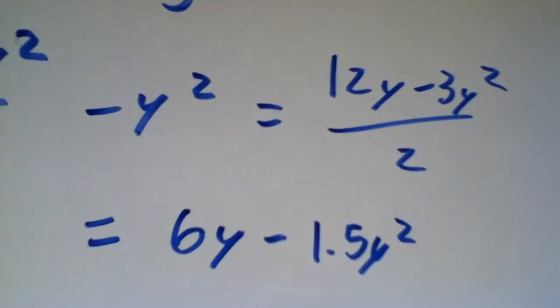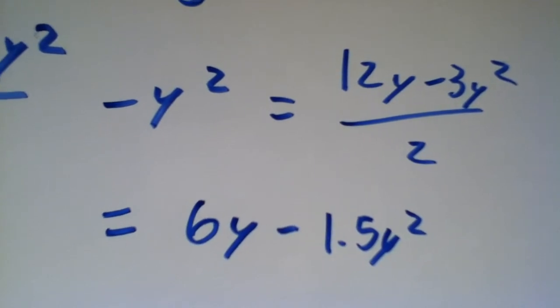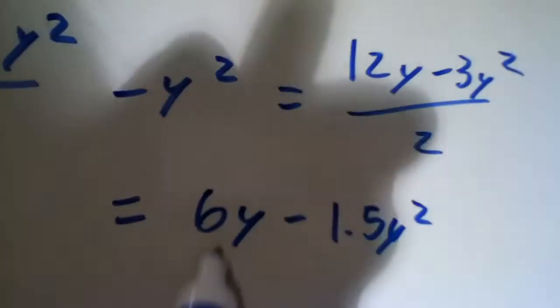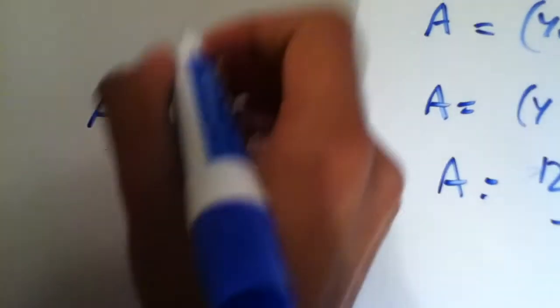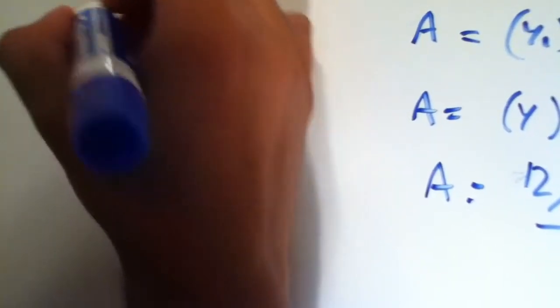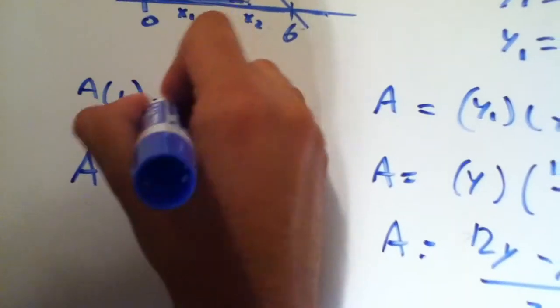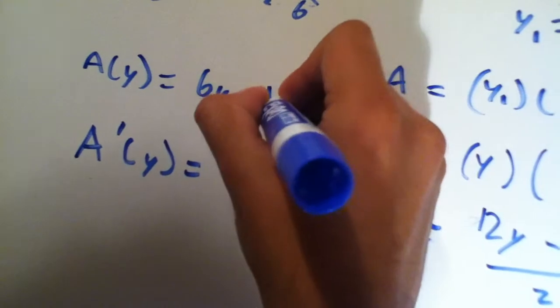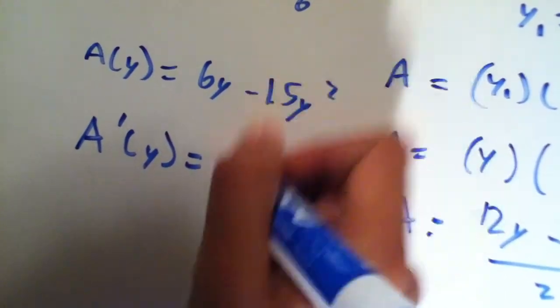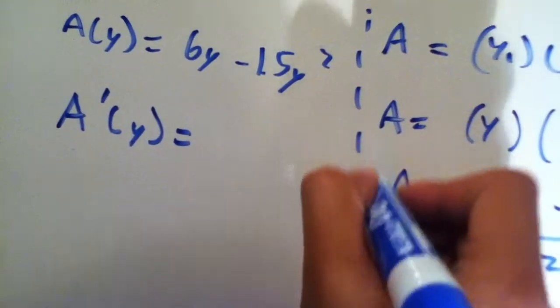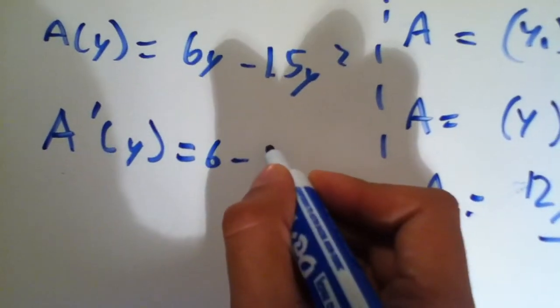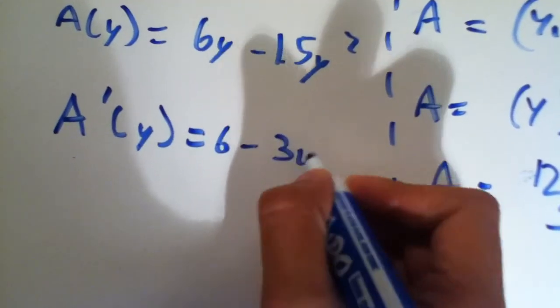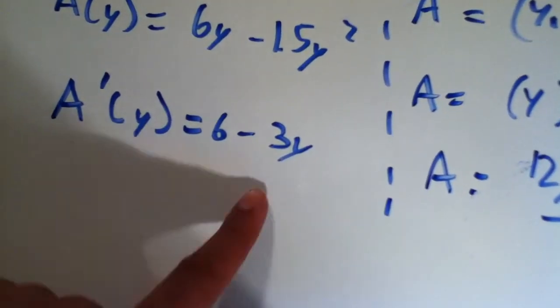So the next part of this problem is to take the derivative of this. So the derivative of this is, I'm going to label it that, so the original in terms of y is 6y minus 1.5y squared. And the derivative of this is 6 minus 3y. And we equate this to 0.